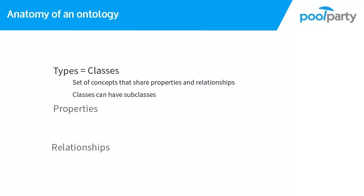It is important to understand that in the ontology you define the class and which attributes and relationships classes are allowed to have, but you do not actually define the attribute value itself. In the ontology, all you do is describe how things can be, but not how they actually are. In other words, in an ontology you define which information you are allowed to associate with certain concepts, but you do not specify the actual information itself.